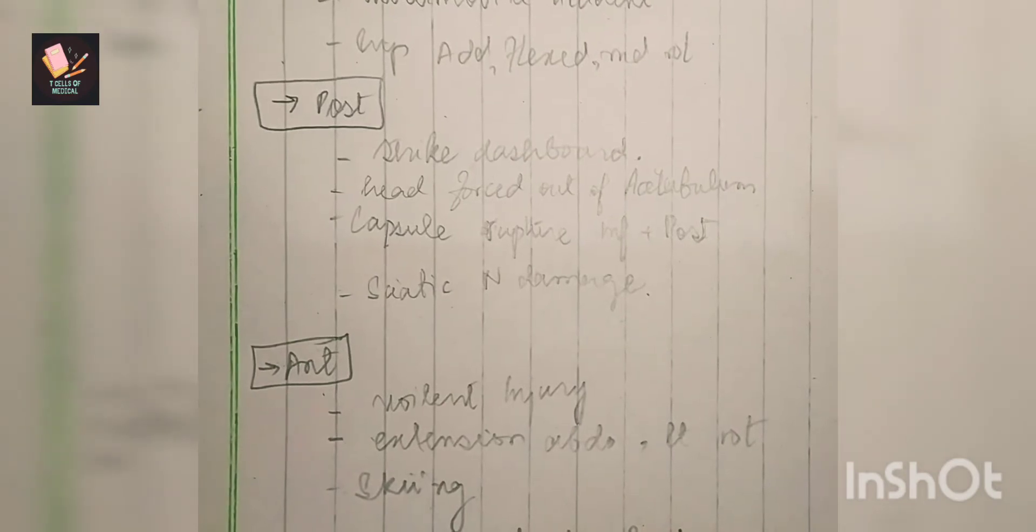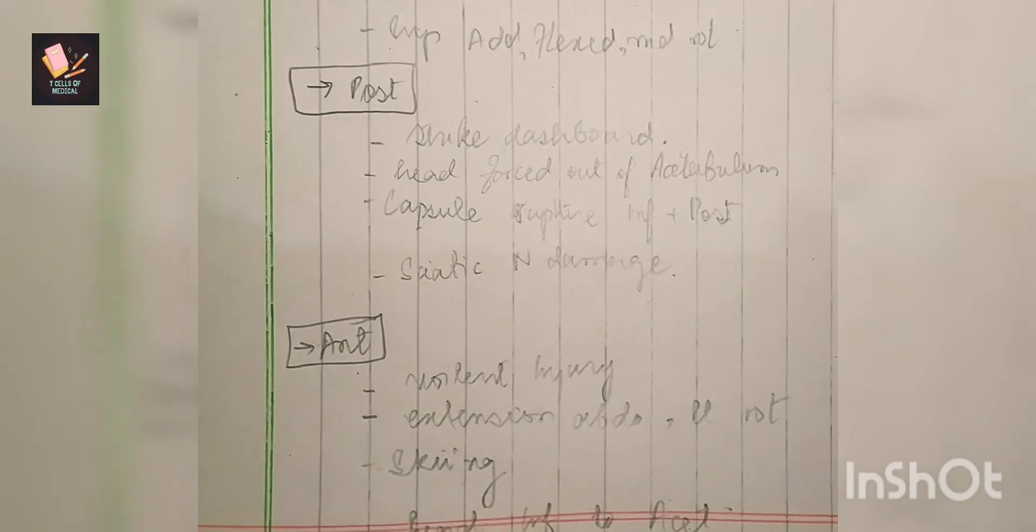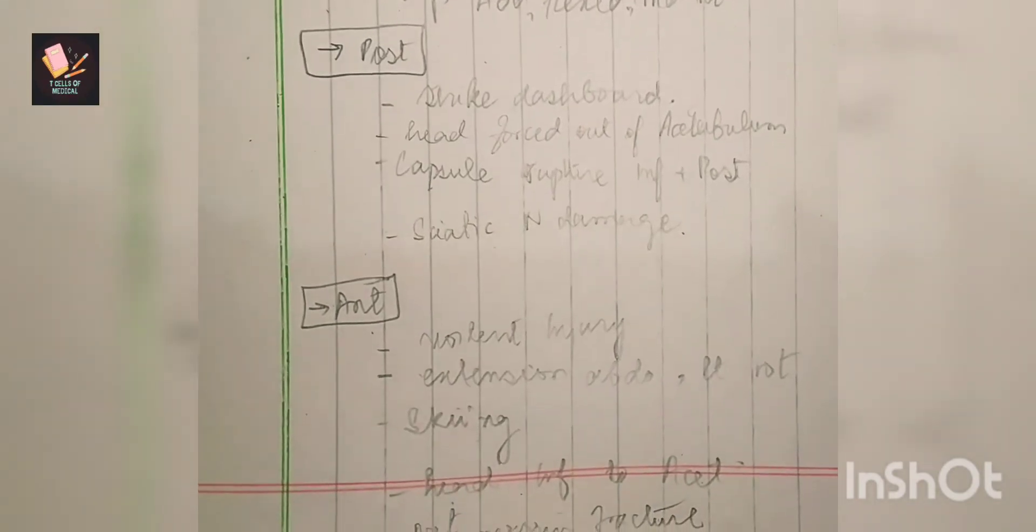The head is out of the acetabulum. The capsule is damaged on the inferior and posterior side. The sciatic nerve is also damaged in posterior dislocations.